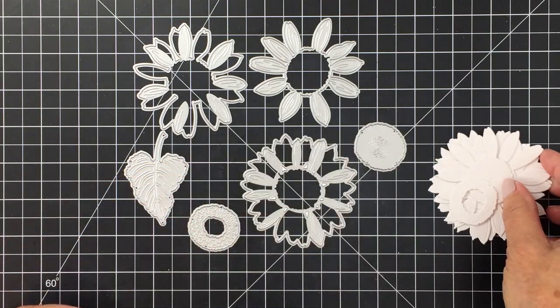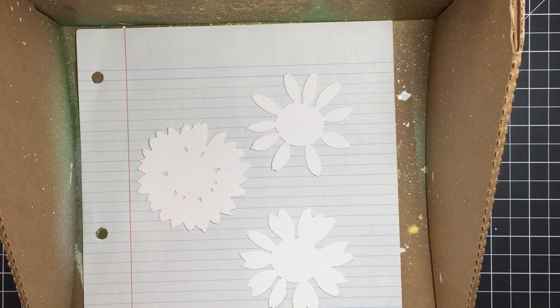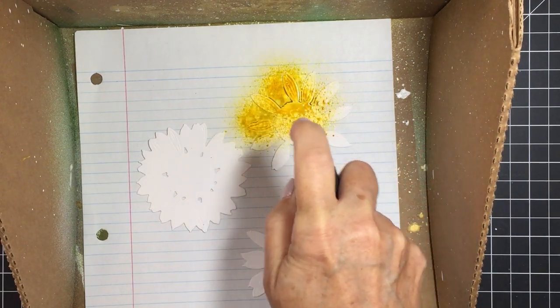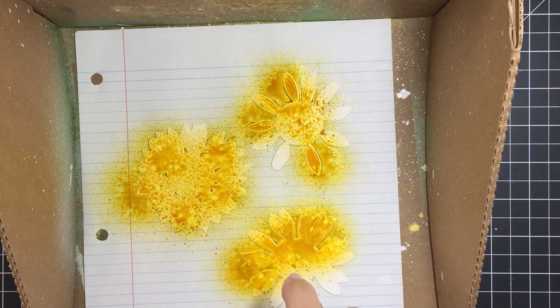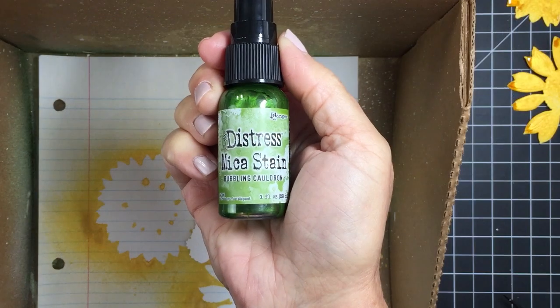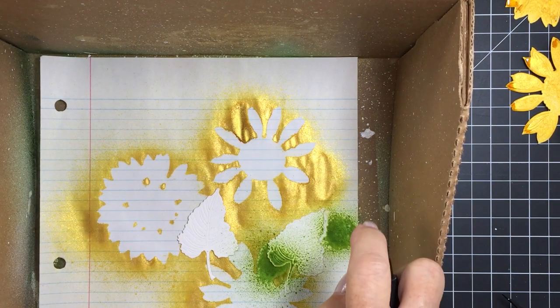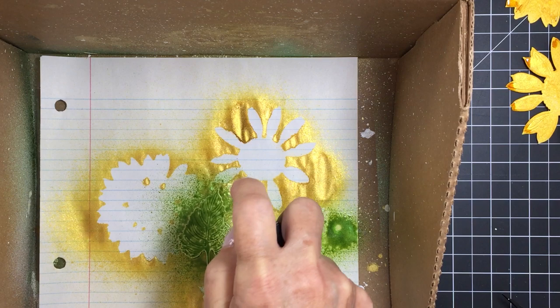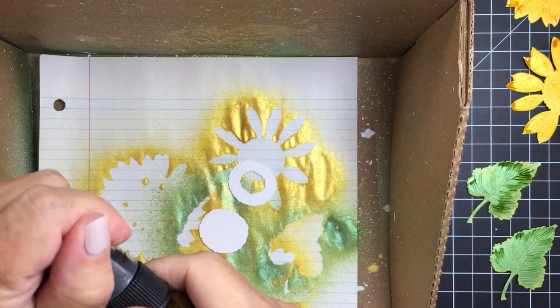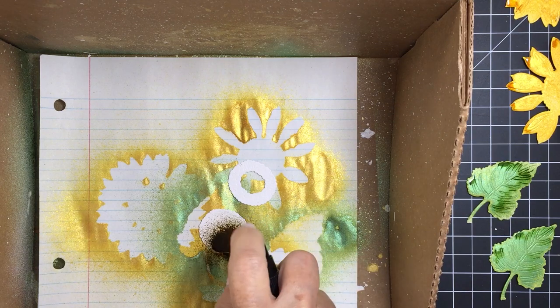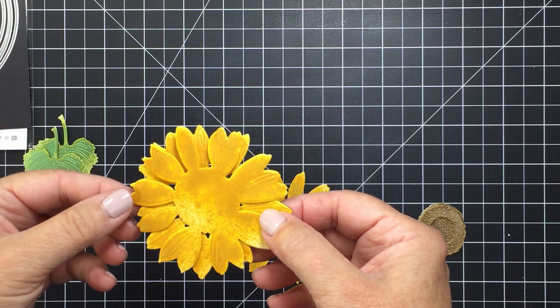I'm actually going to cut this again from some mixed media paper and then put the pieces into my splat box. I'm going to spray them with the different mica stains that are brand new from the Distress line from Tim Holtz and Ranger. So I started off with the Flickering Candle. Now I'm going to be using the Bubbling Cauldron and then lastly the Crooked Broomsticks. So this is going to give me the yellows for the sunflower, the greens for the leaves and the brown for the center.